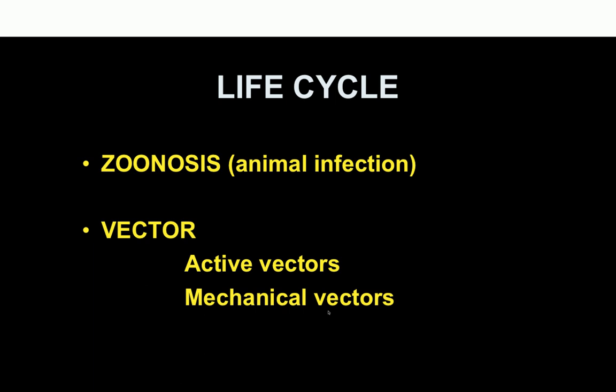For example, a housefly is a mechanical vector — it transmits amoebic cysts from infected stool to food, which is then eaten by humans, causing intestinal amoebiasis.